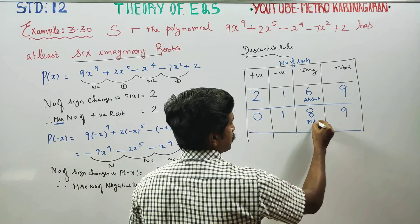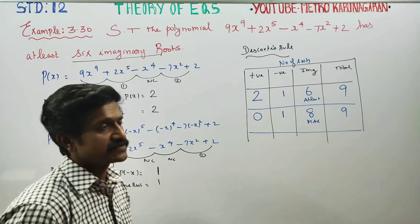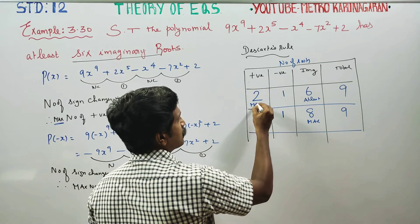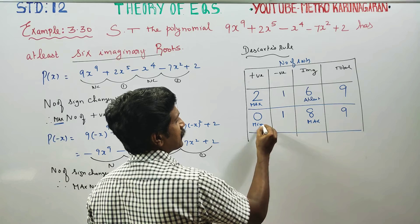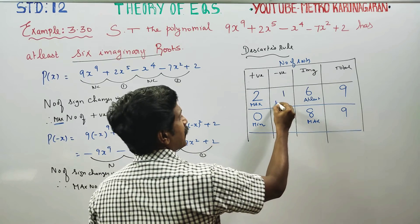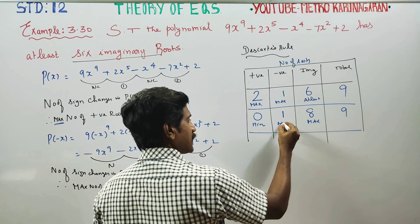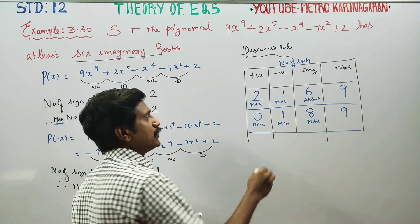On the maximum side: maximum 8 roots, maximum 2 roots, maximum 0 roots, maximum 1 root. The minimum is determined by subtracting — minimum of positive roots is 0, minimum of negative roots is 0.